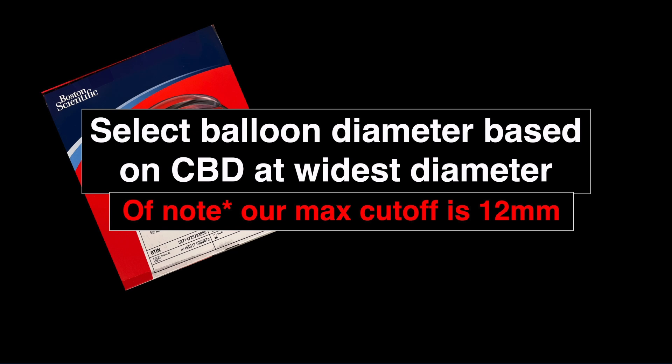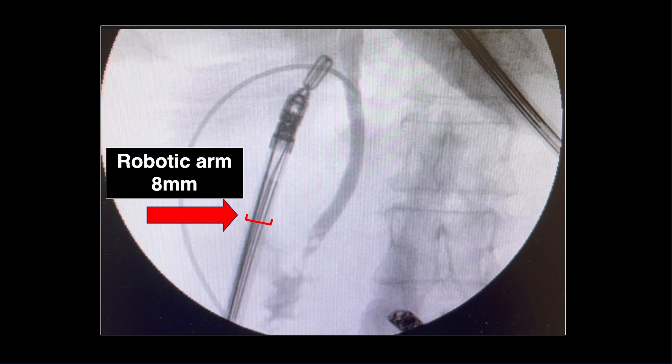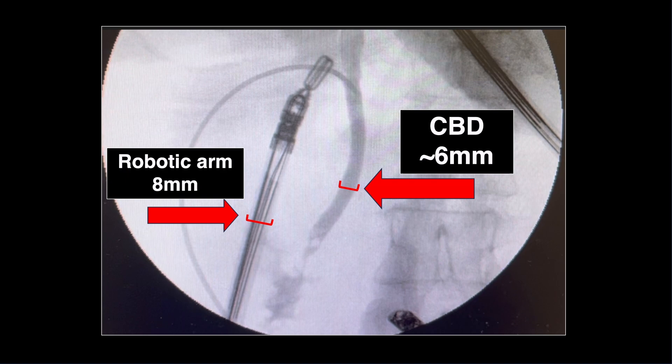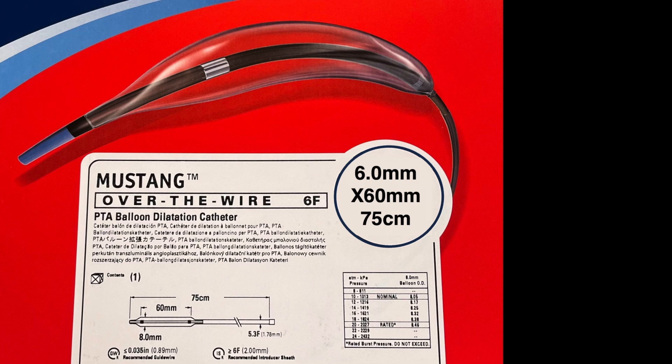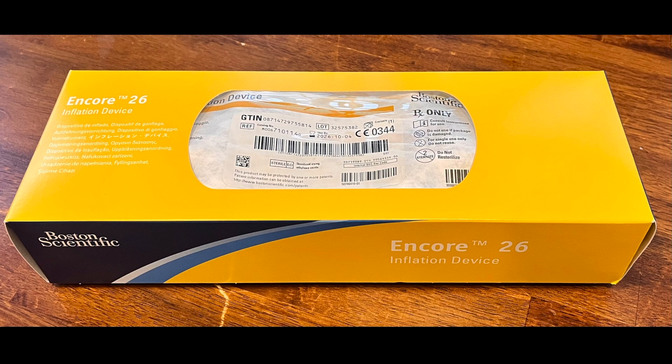Here is an example of how to choose a balloon size. On this cholangiogram, you compare the 8 mm robotic arm to the common bile duct, which measures approximately 6 mm at greatest diameter. So here you would choose a 6 mm balloon with a 60 mm or 6 cm length and a 75 cm catheter. Once you have selected your balloon, the next step is to prepare the inflation device and balloon for insertion. We use the Boston Scientific Encore 26 inflation device.